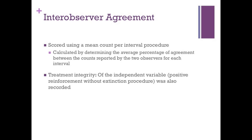Inter-observer agreement was scored using a mean count per interval procedure, calculated by determining the average percentage of agreements between counts reported by two observers for each interval. The mean inter-observer agreement obtained across 33% of conditions was 93%, ranging from 82% to 100%. The positive reinforcement without extinction procedure was recorded on data sheets by the observer during 30% of the sessions.